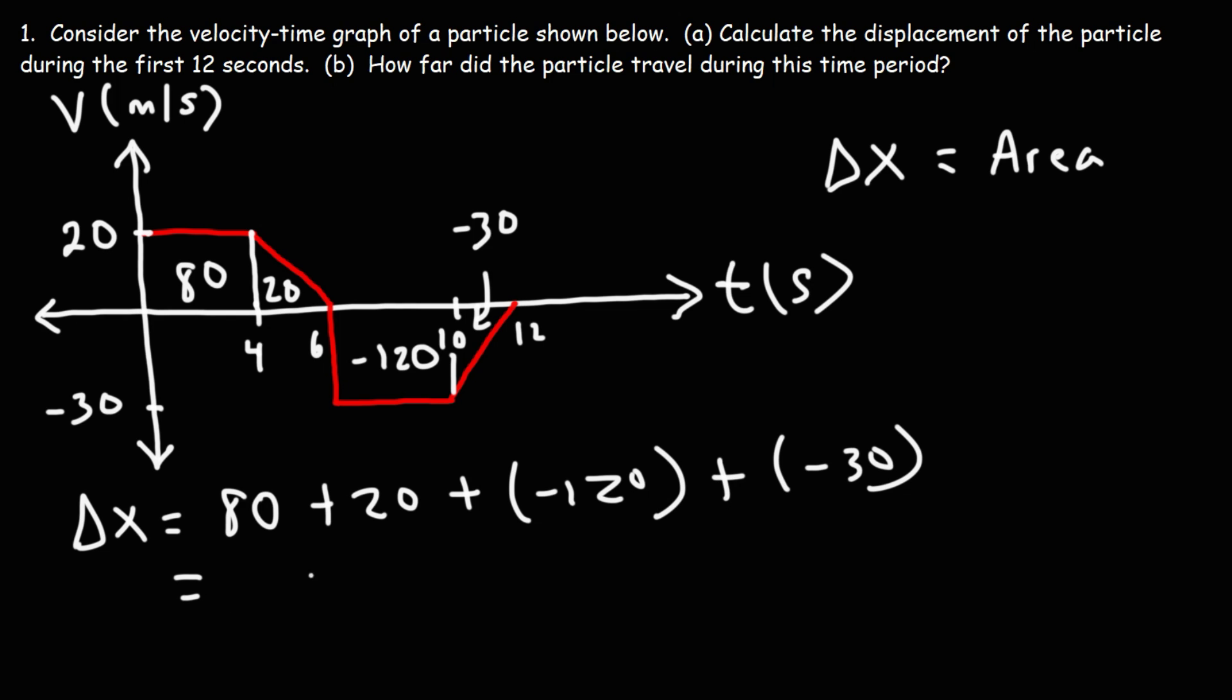So 80 plus 20 is 100. Negative 120 plus negative 30, that's negative 150. And 100 minus 150 is negative 50. So the displacement is negative 50 meters. So that's the answer for part A for this problem.